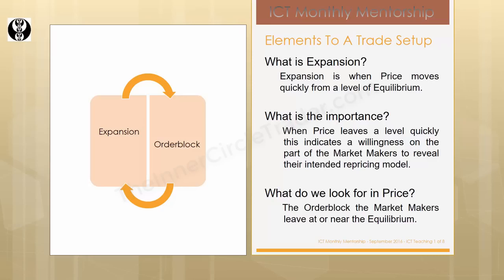Where is that going to occur? What do we look for in price? The order block that the market makers leave near or at the equilibrium price point. I know what you're thinking — this is already going over my head, give me some examples. No problem. I'm going to show you that right now.